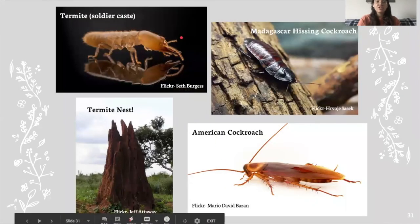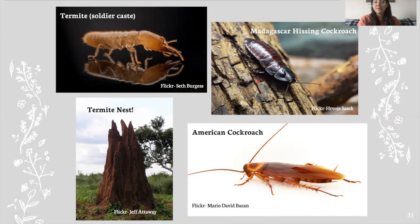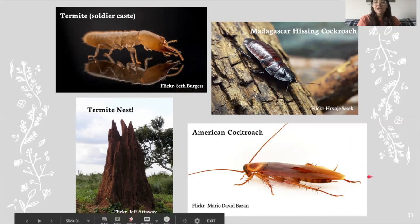Here we've got some pictures. We have this termite, and we know it's of the soldier caste because it has large mandibles. And this is a termite nest — do you see how big that is? That is incredible. We've also got this Madagascar hissing cockroach, which is extremely cool — many people keep them as pets, and the UT Insect Collection actually has some that they bring to demonstrations and outreach events. And lastly we've got the American cockroach, which is probably the one you're most familiar with.